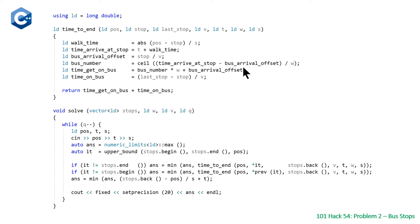And then we can get the bus number by using the ceil function on this time to arrive at the stop, subtracting the bus arrival offset, and then dividing that by the waiting time. So once we have this round number we then multiply it by the waiting time.